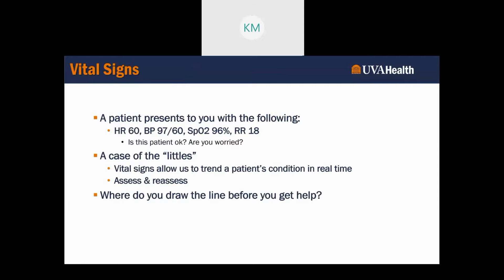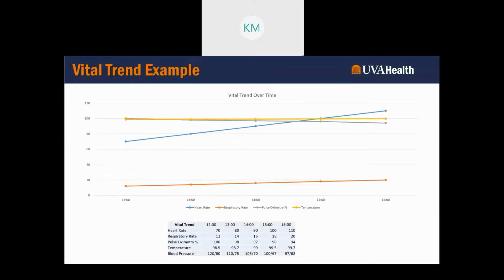So these are things to think about: where did my patient start? Is this an okay place for them to be? Let's talk about a case of the littles, for example. A patient's heart rate at one minute is maybe 70, then an hour later it's 80, then 90, then 100 — just going up a little bit each time. If you look at this vital trend at the bottom of your screen, where does it end?